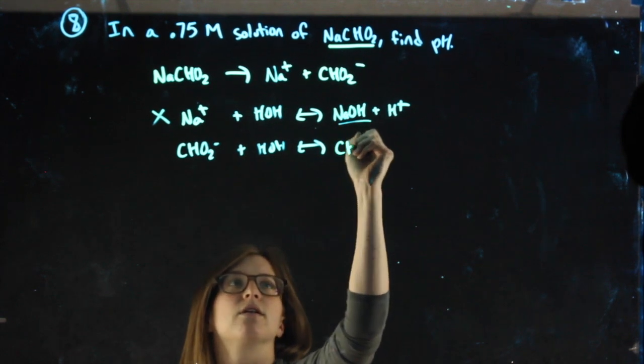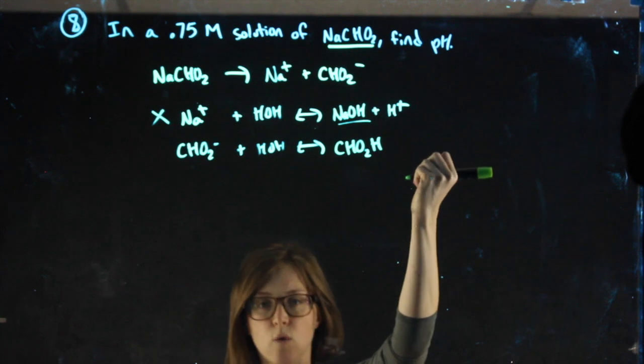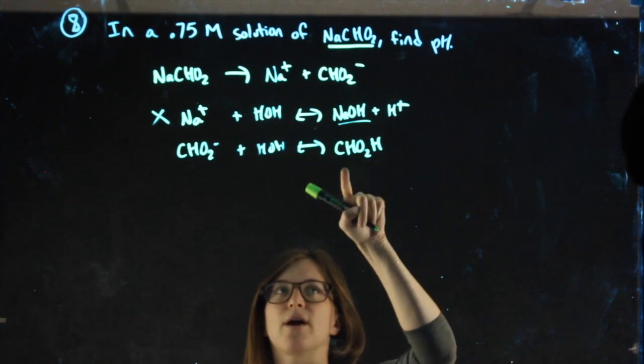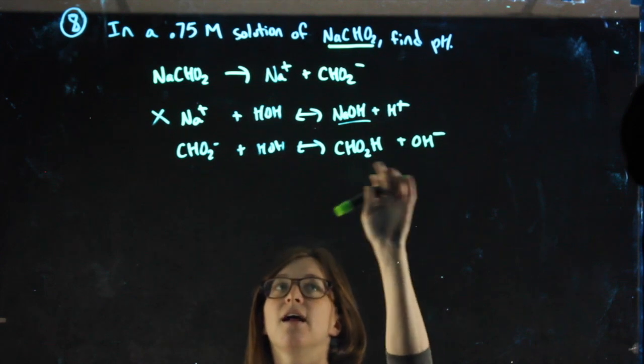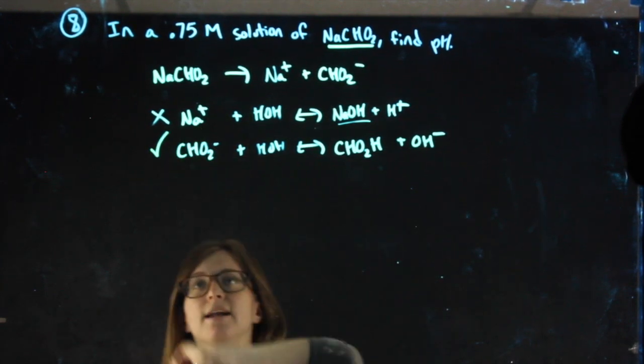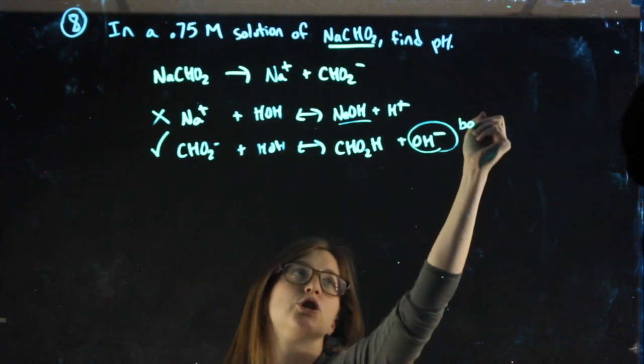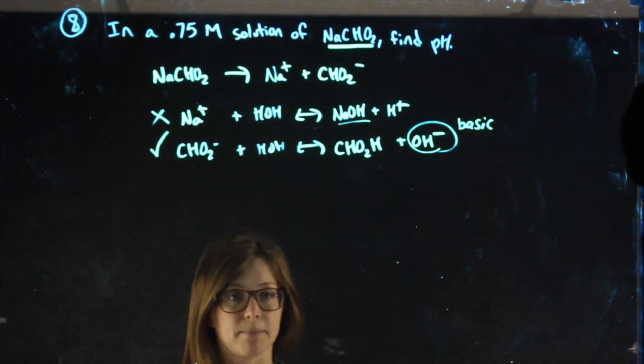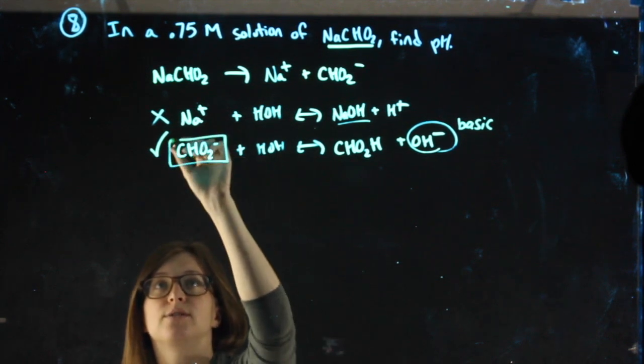This is negative, so it'll react with the positive part of water. It doesn't matter where you stick that H, but it'll release hydroxide. This is not strong, therefore this can happen. Since this reaction happens and produces OH-, we know we're dealing with something basic, which means I need to do a weak base problem using that ion.